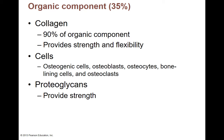The organic component — that 35% carbon-based portion — is primarily collagen, which makes up 90% of the organic component. Collagen provides strength and flexibility. If you bake bone and remove the collagen, it becomes super brittle. The other organic components include living cells: osteogenic cells (original stem cells), osteoblasts, osteocytes, osteoclasts, and bone lining cells. There are also protein-sugar molecules (proteoglycans) that give bone additional strength.